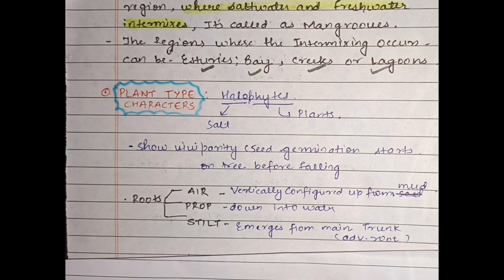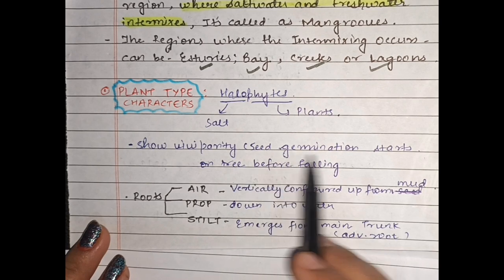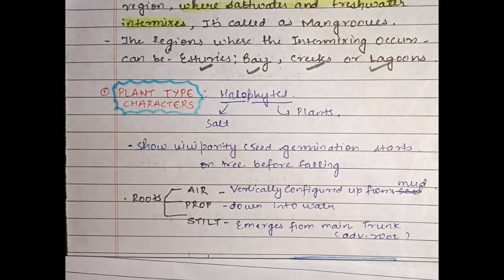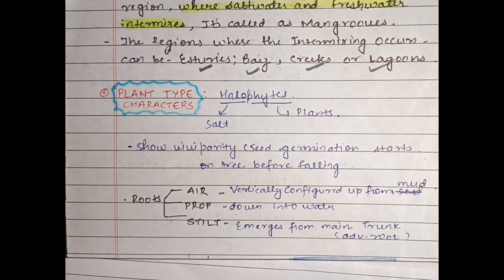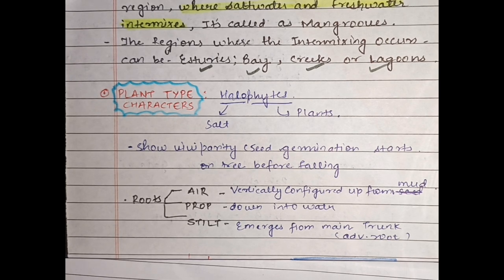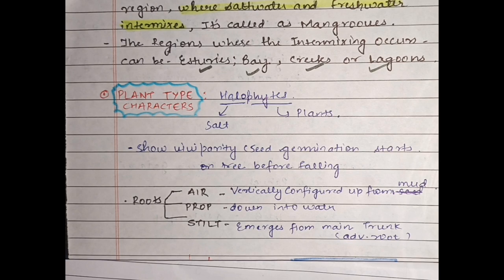The most important characteristic of mangroves is viviparity — the seed germination starts on the tree before falling. Normal germination hota hai jab seeds soil ke contact pe aate hain. But yahan unfavorable salty conditions hain, toh seeds direct salty conditions ke contact pe aayenge toh unki death ho sakti hai. Iske liye inki apni adaptation hai: viviparity — joh seeds hoti hain, woh plant mein hi germinate hona start ho jaati hain. Jaisi woh detach hoke soil ke contact mein aati hai, toh after germination woh grow karti hai.